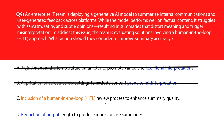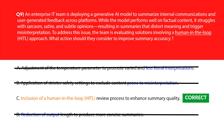Option C says inclusion of a human-in-the-loop review process to enhance summary quality. Human oversight improves contextual understanding and preserves intent — let's keep it. Option D says reduction of output length to produce more concise summaries. Shortening output reduces detail but doesn't solve misinterpretations — wrong answer, and that's not what the question requires. We'll lock option C as the right answer.